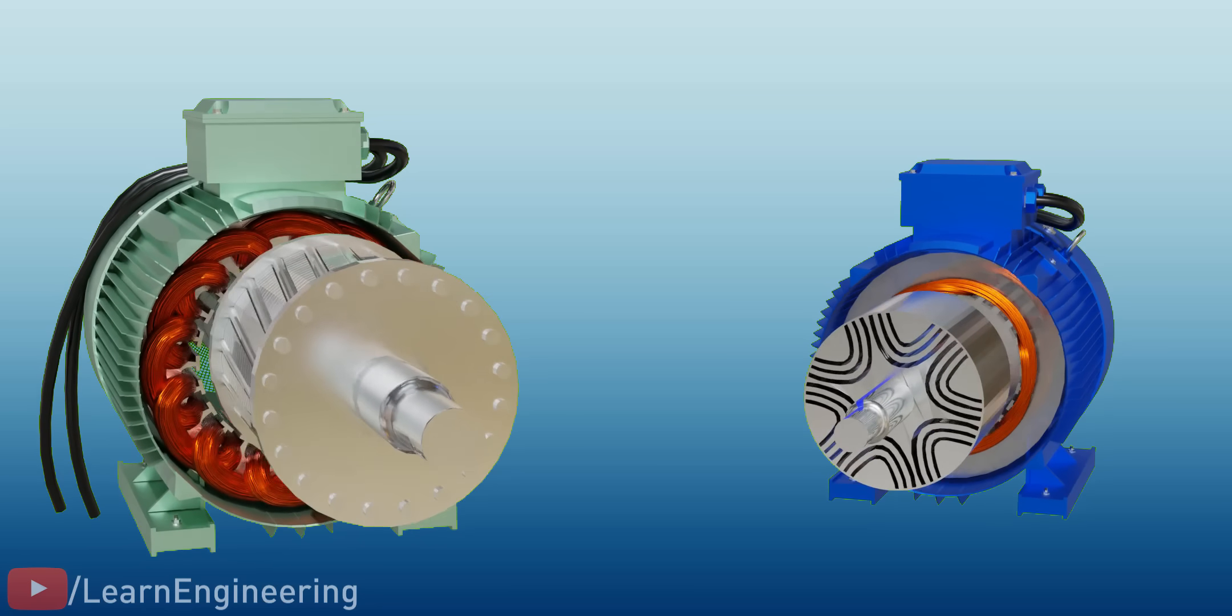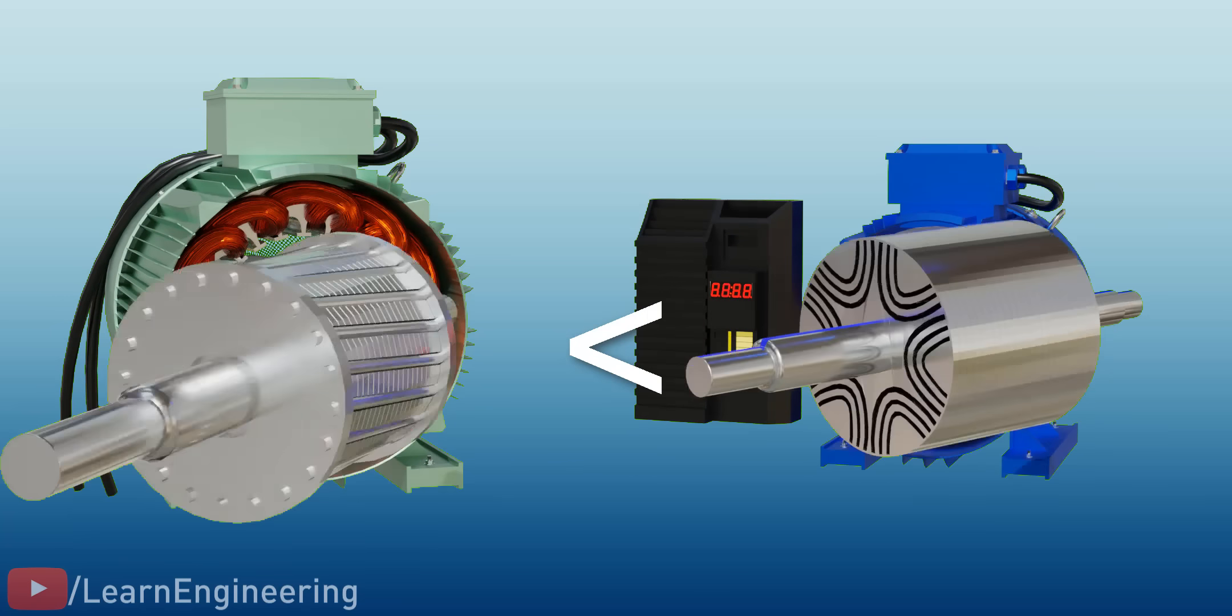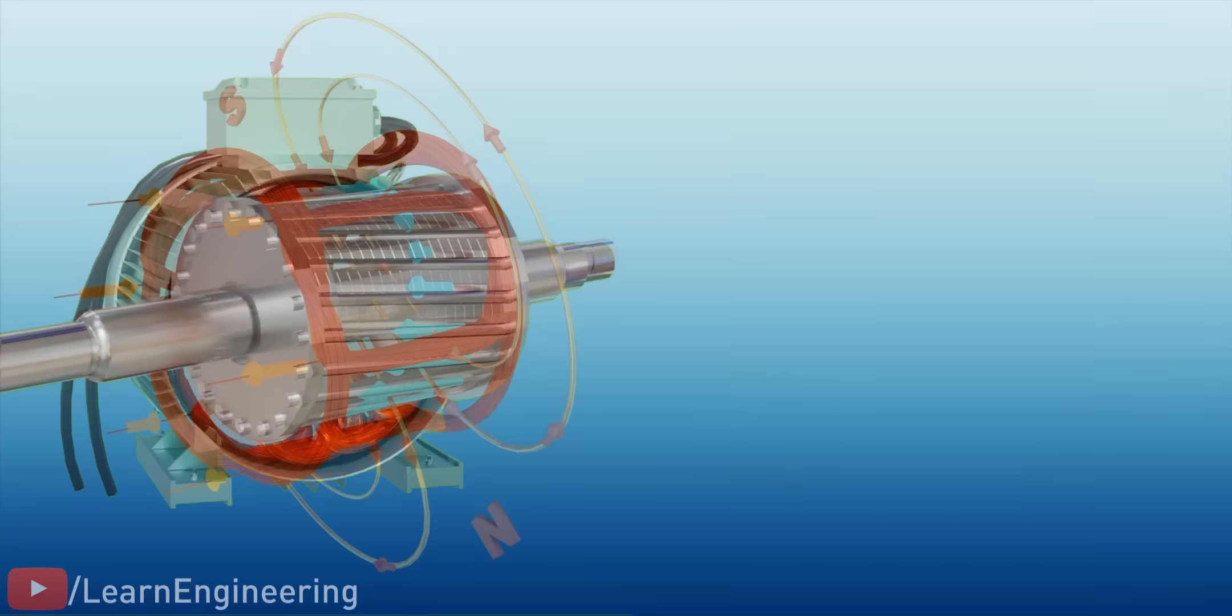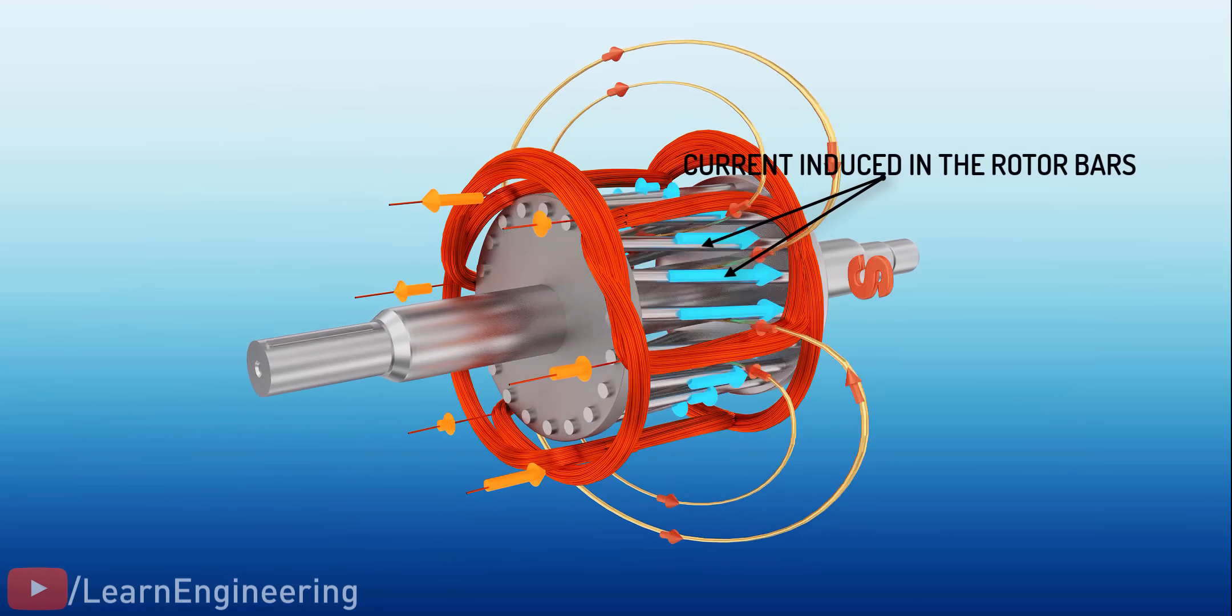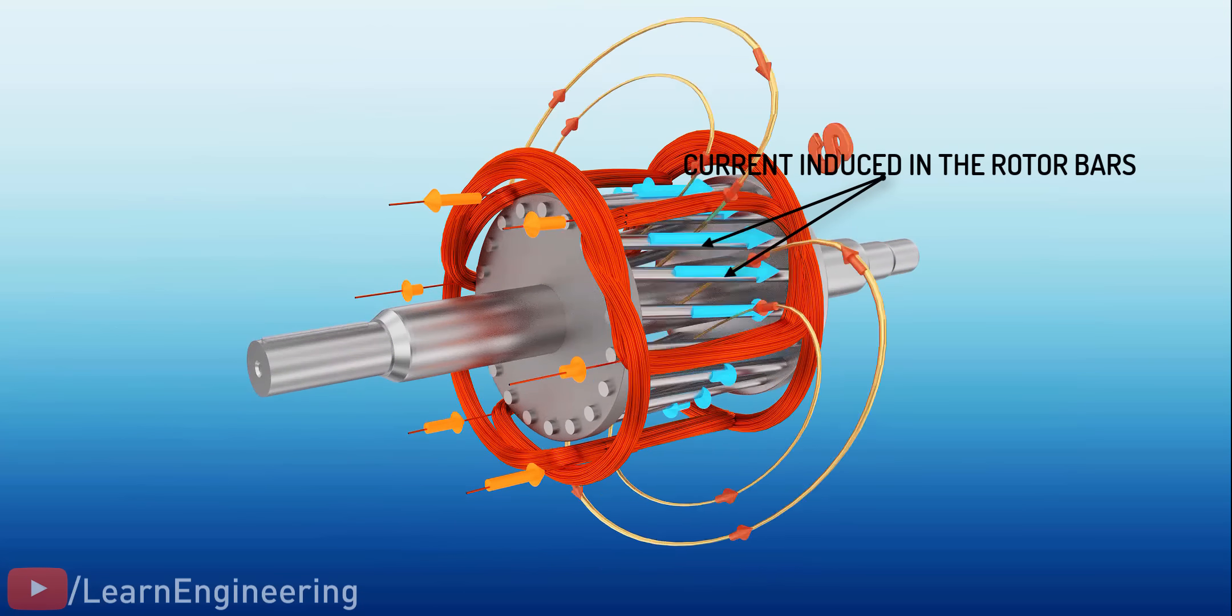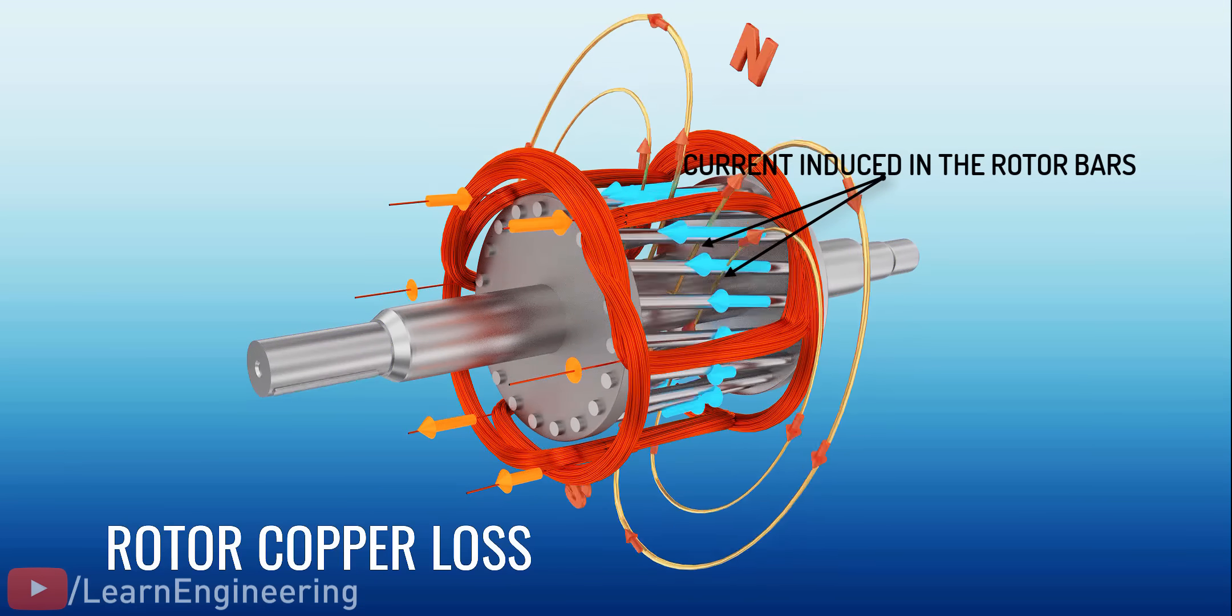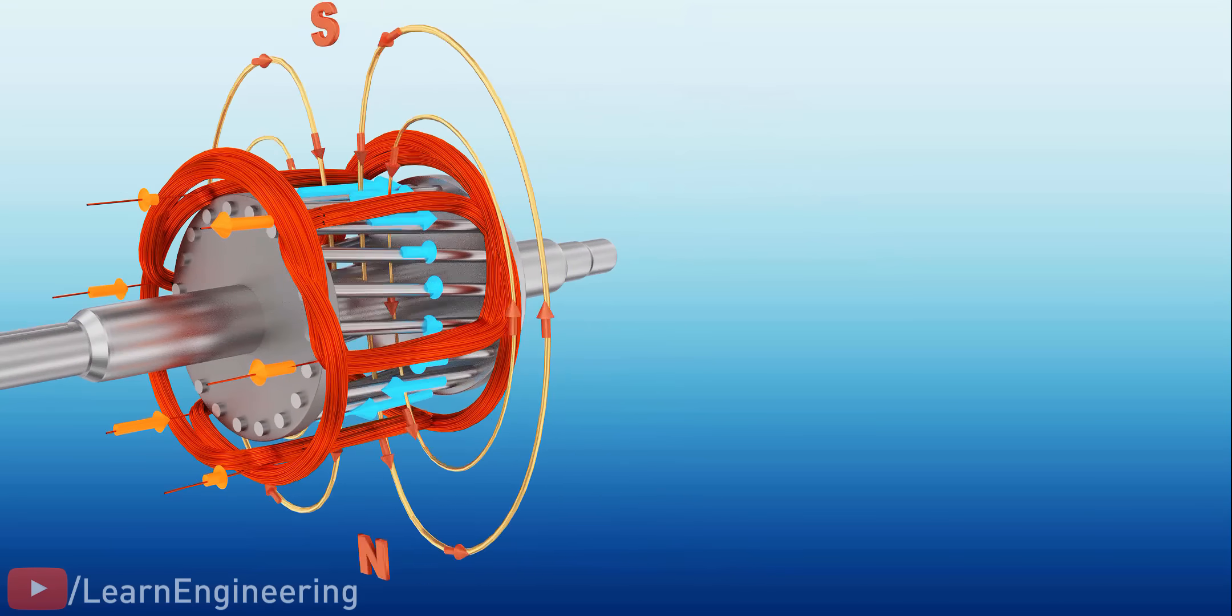SynRMs have started replacing induction motors in most of the industries due to its remarkable performance. In the induction motors, torque is produced due to the interaction between the RMF and current flowing through the rotor bars. This current flow results in considerable amounts of I-squared R losses. Losses in the form of heat. This is why the induction motors have a lesser efficiency compared to the SynRMs.